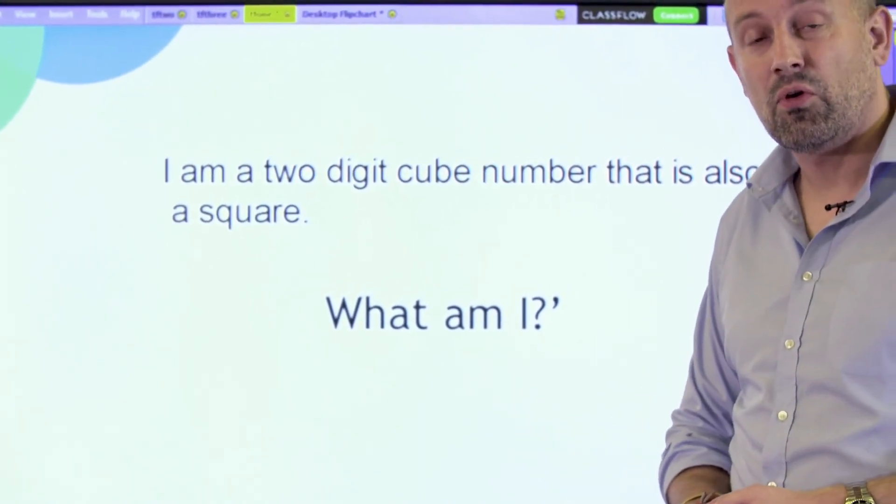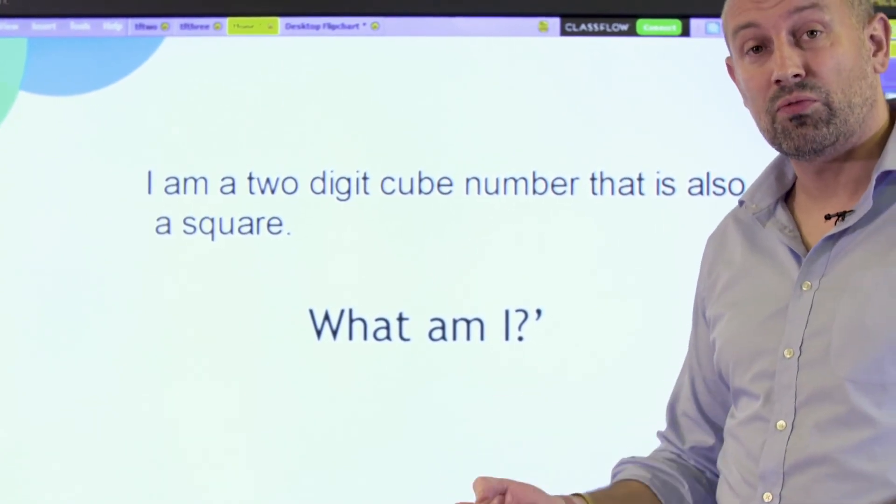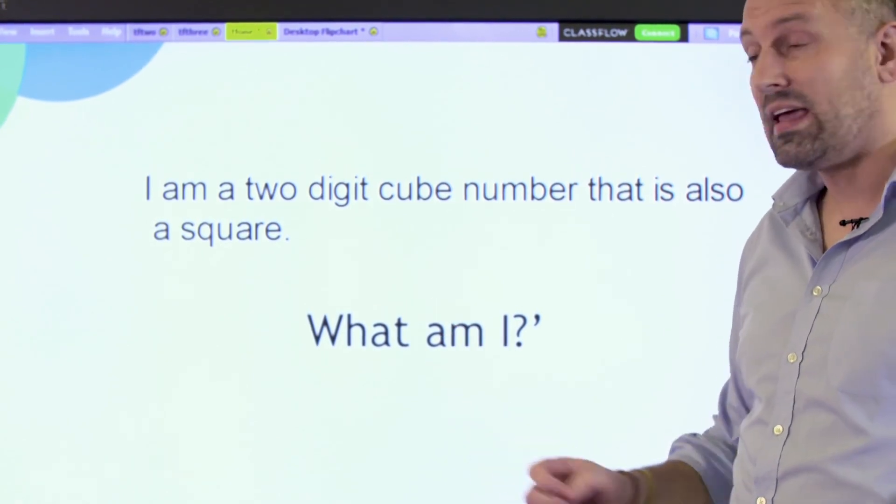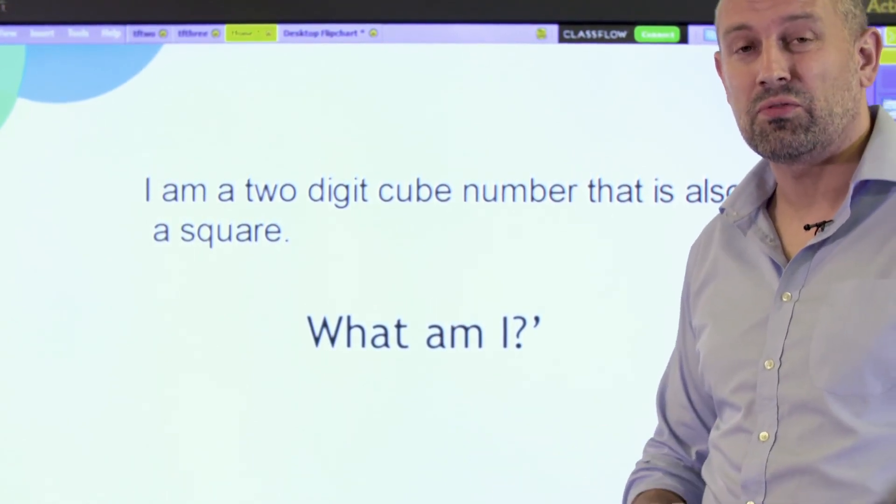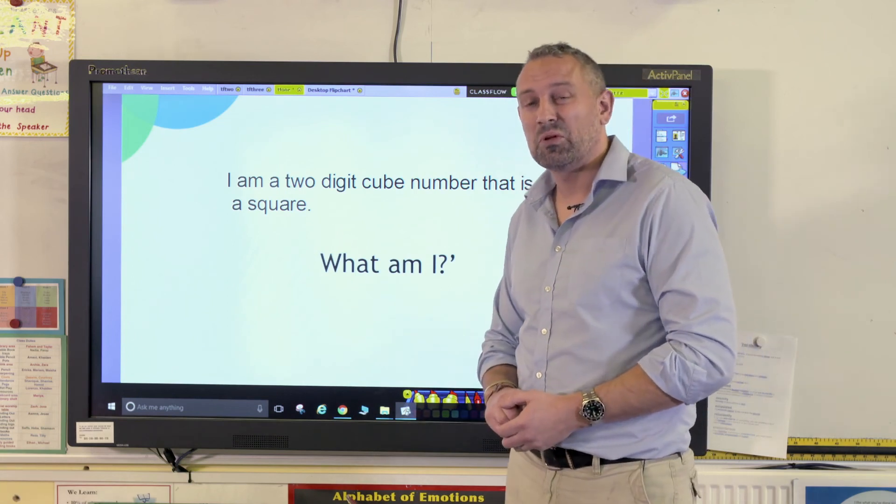In this case, the answer is 64 because 4 times 4 times 4 is 64—that's the cube—and 8 times 8 is also 64. That's the square number, and that's just the beginning to square and cube numbers.